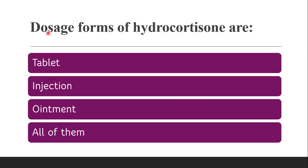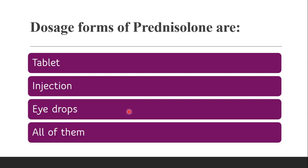Next question: dosage forms of hydrocortisone are — injection form, oil form, or all of them? The correct answer is all of them — it exists in tablet, injection, ointments, eye drops, and various salt forms of injections. Similarly, dosage forms of prednisolone are tablet, injection, eye drops, or all of them — the correct answer is all of them.